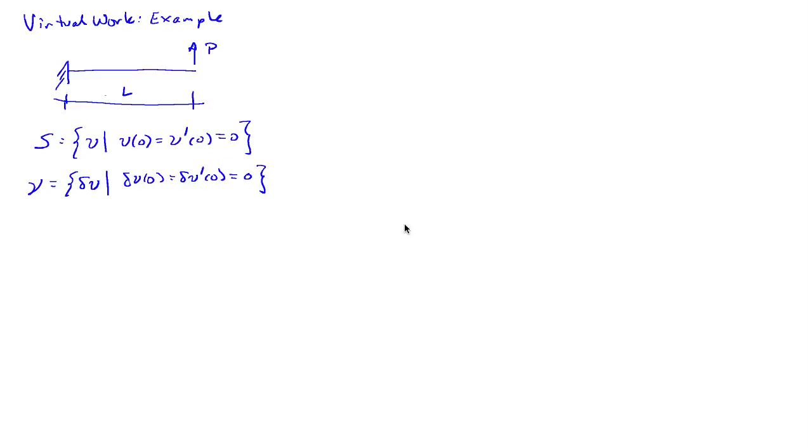So in this case, the space of solutions S is comprised of functions that have zero motion, zero rotation at x equals zero. So we measure x from the support. And the space of test functions V consists of functions that have the exact same properties.